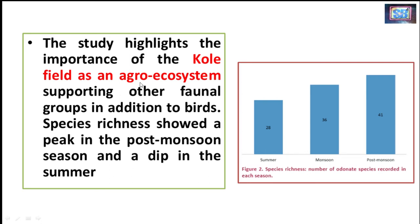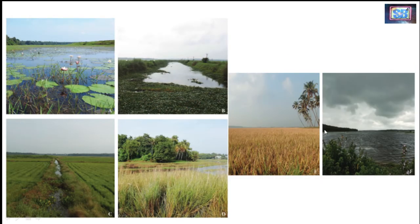The researchers highlighted the Kol wetland area as an important agro-ecosystem. While studying species richness, they found that the richness of species was high during the post-monsoon season. These are the important micro-habitats of that Kol wetland area.